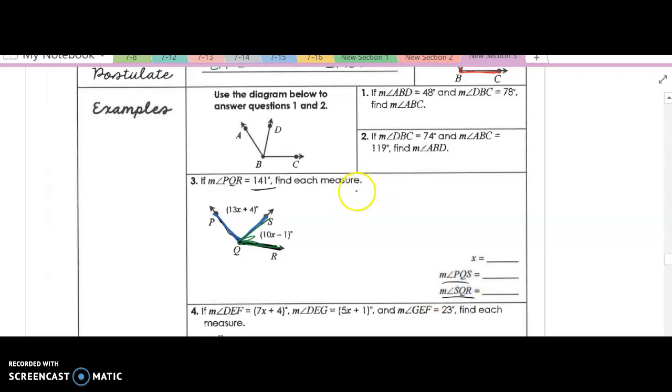Okay, so here I'm going to have 13x plus 4 plus 10x minus 1 must be equal to 141. All right, well, here we can combine like terms, we get 23x plus 3 is equal to 141.